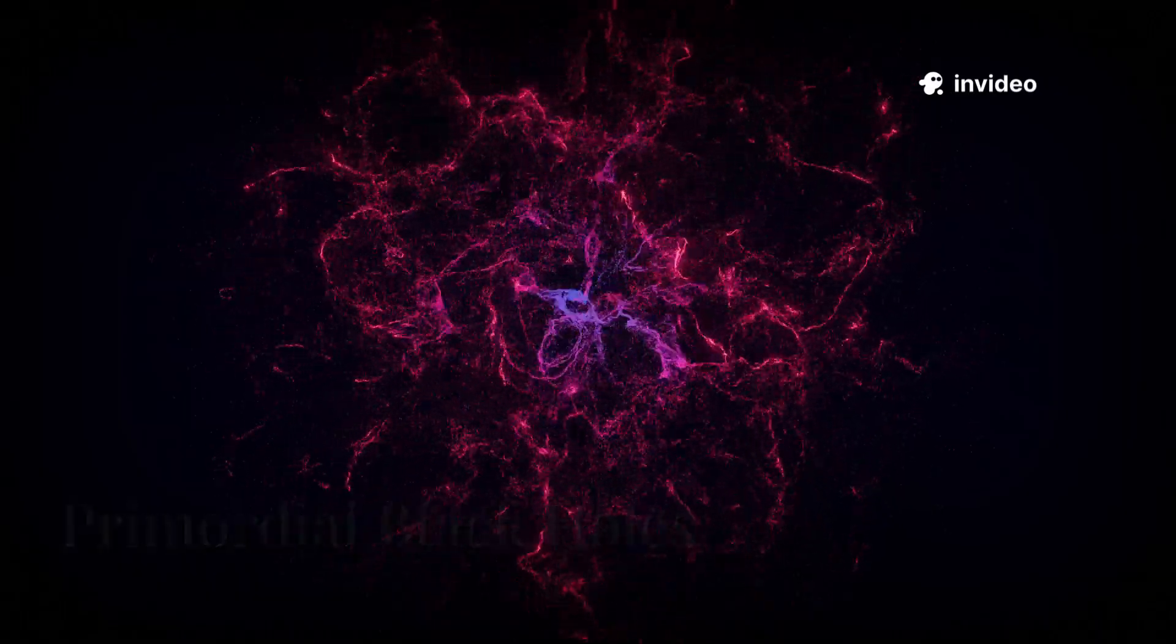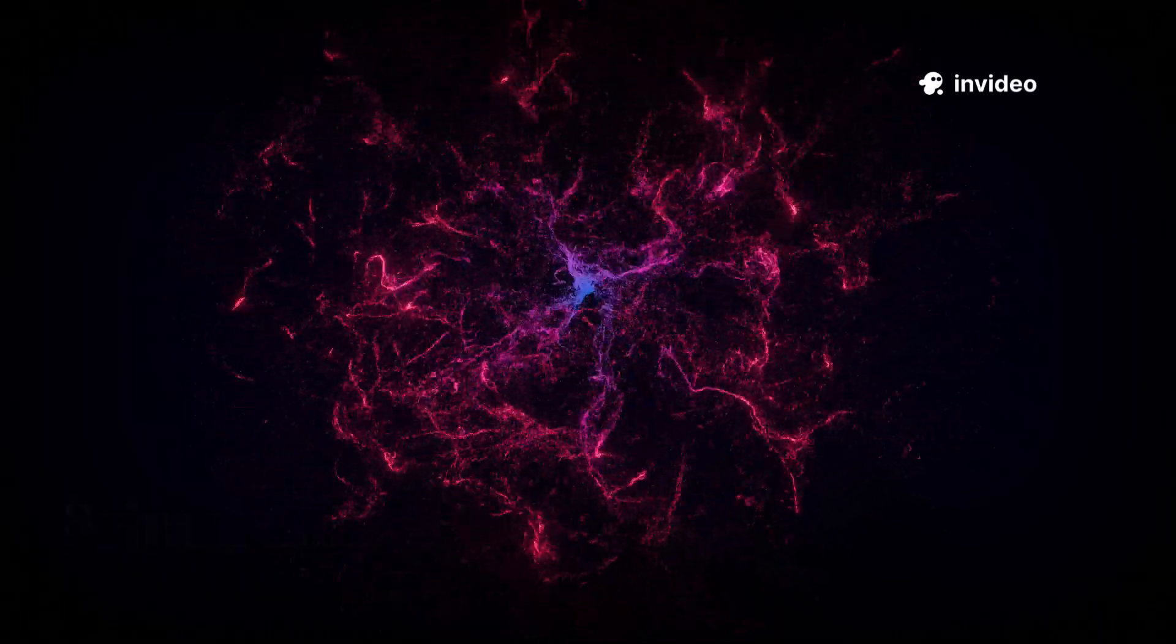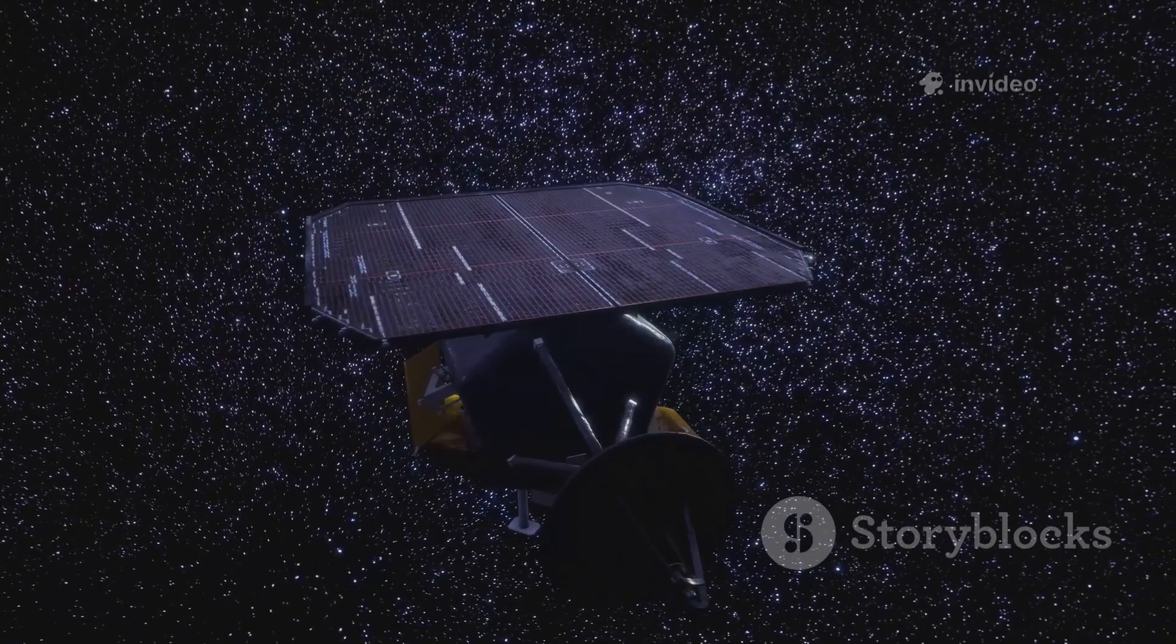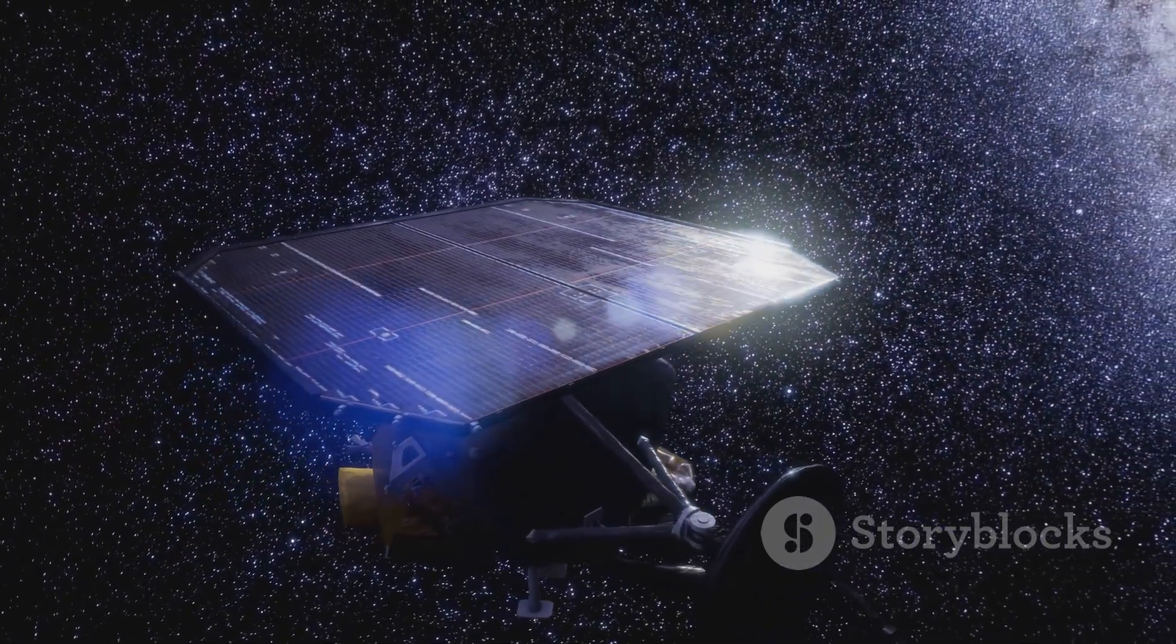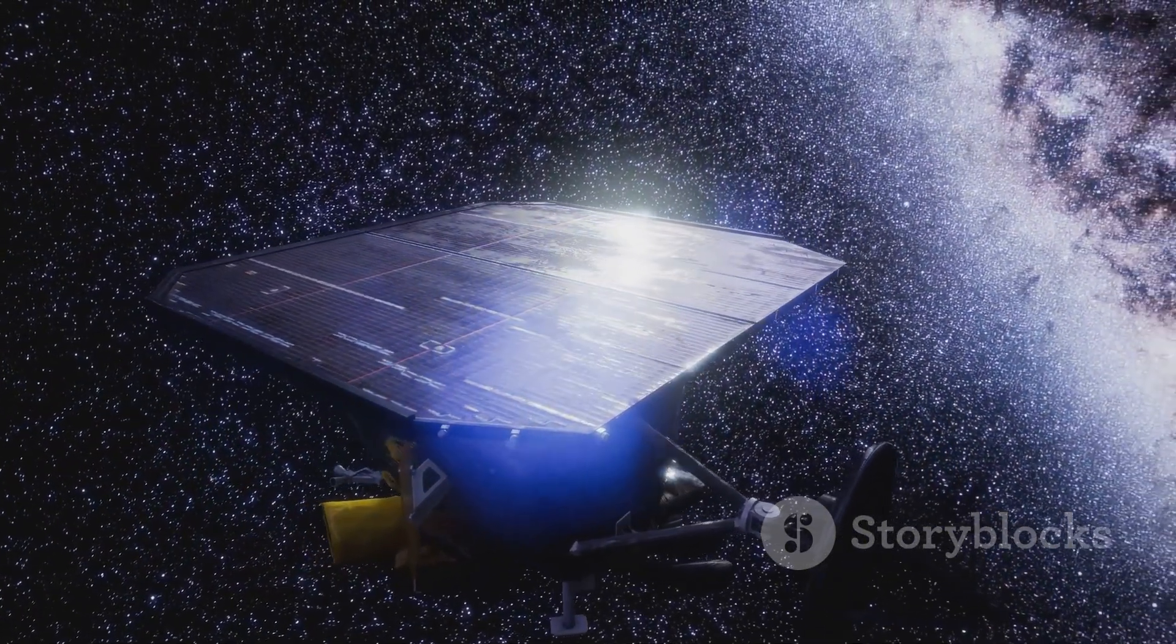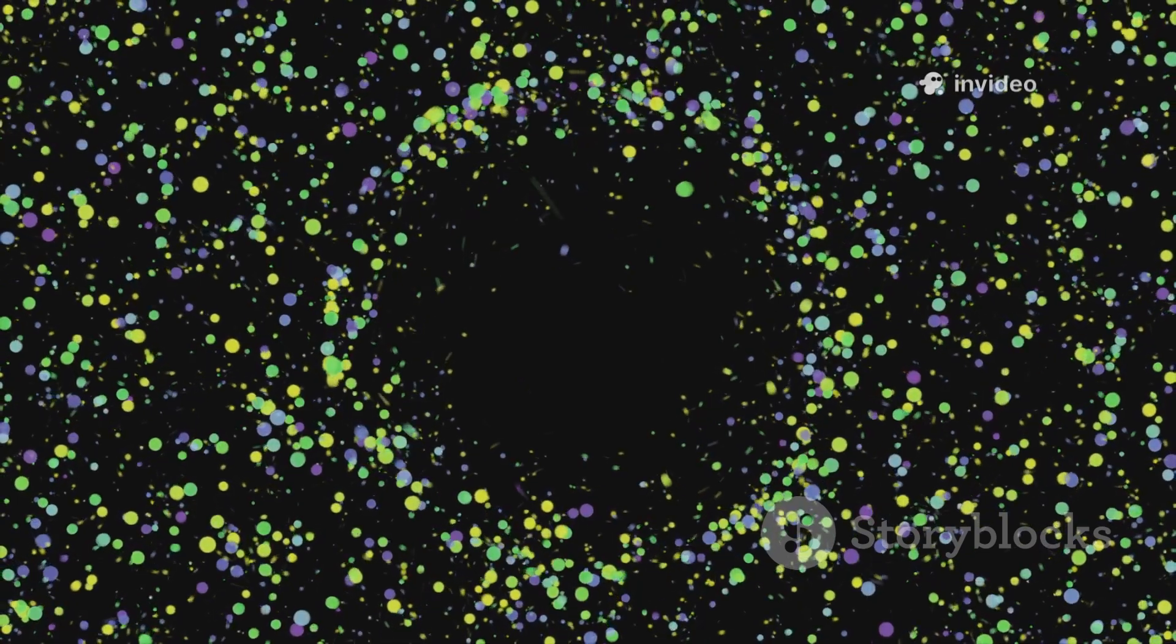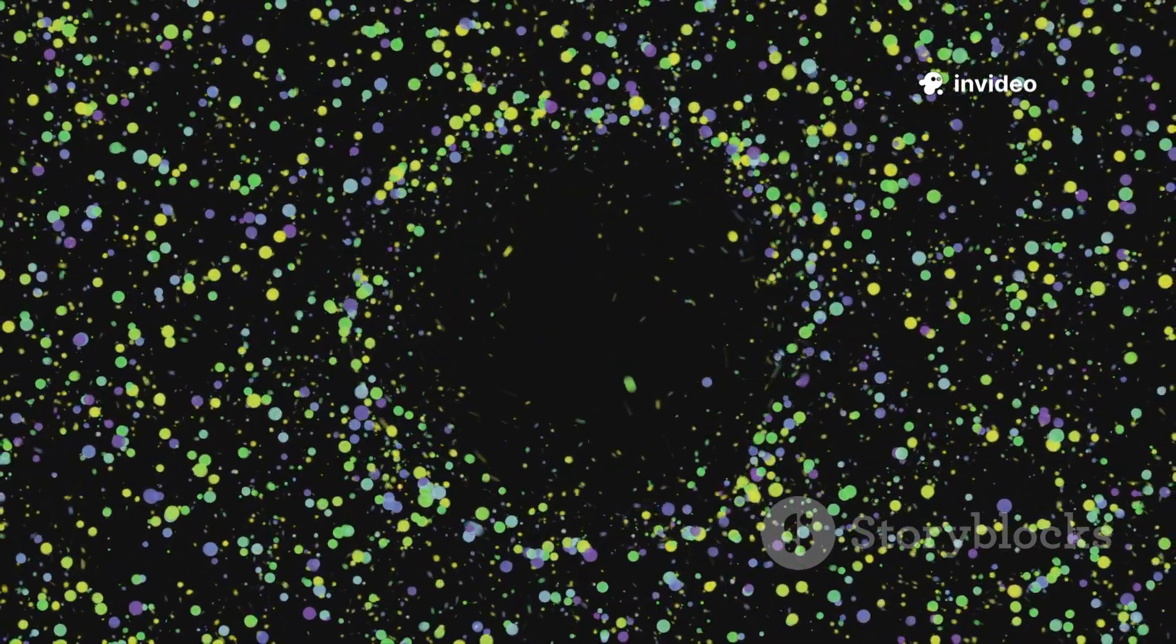To explain these giant early black holes, scientists are revisiting the idea of primordial black holes, born in the chaos of the Big Bang itself. In the Universe's first second, dense regions could have collapsed directly into black holes, skipping the need for stars.